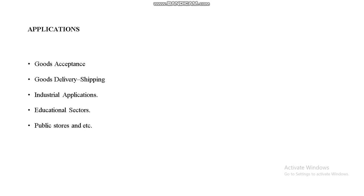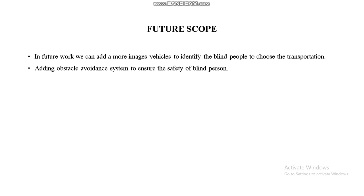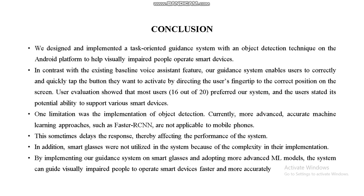Applications include goods acceptance, goods delivery, and shipping, where visibly impaired persons can control smart devices using our proposed system. Future scope includes adding more images of vehicles to help blind people choose transportation, and adding an obstacle avoidance system to ensure the safety of blind persons. In conclusion, time delay affects system performance, and faster CNN approaches are not applicable to mobile phones.